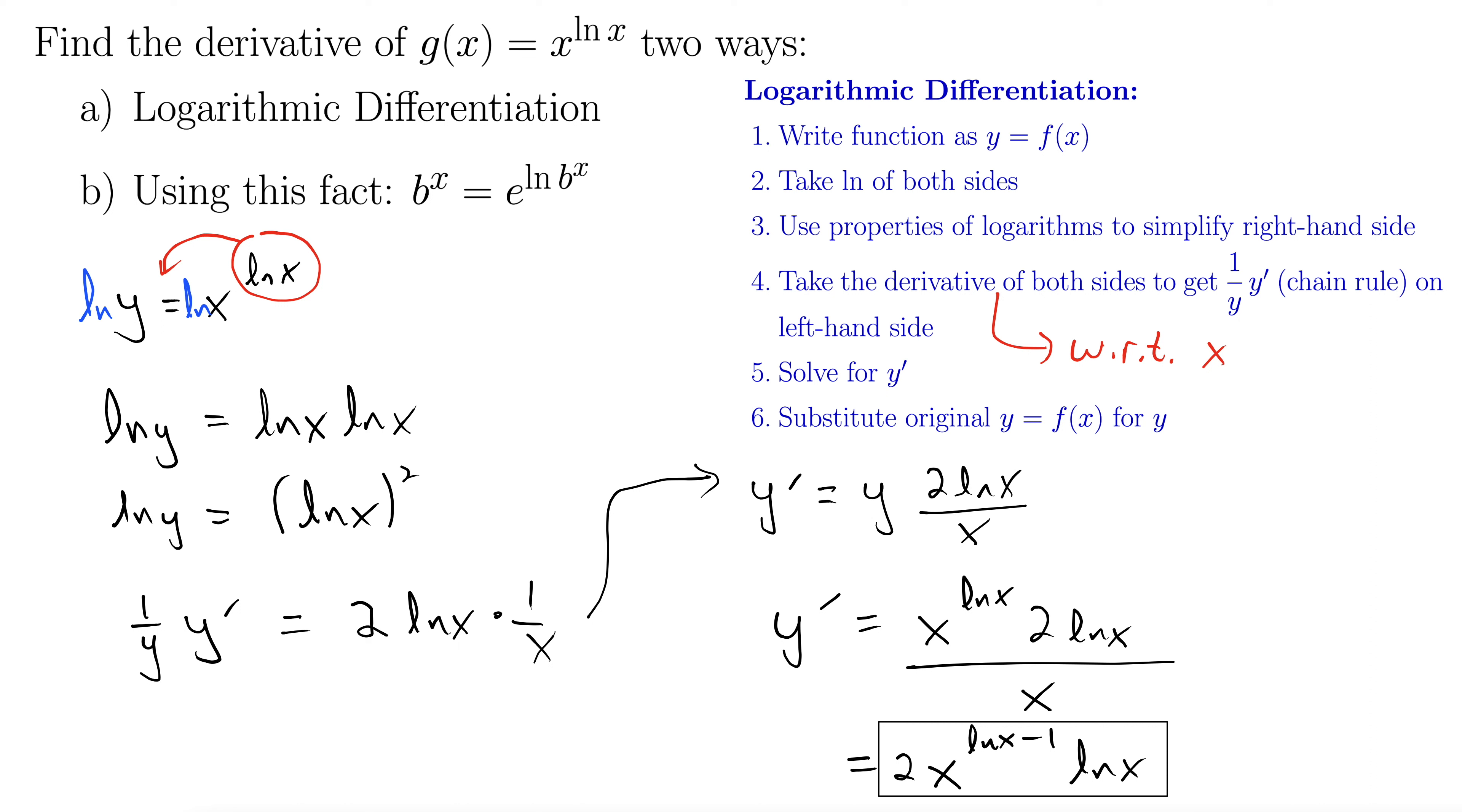Let's take a look at part b. We can solve this using this fact, b to the x equals e to the natural log b to the x. This gets the job done, but I recommend using logarithmic differentiation, but it's good to see that we can also use this other method. So let's proceed to part b here.